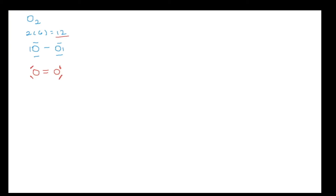Only in a situation where you've filled out the Lewis structure and you're using too many valence electrons should you use a double bond. As a hint, eventually you might also have to use a triple bond, but only use a triple bond if you're still using too many valence electrons after a double bond. Do not just blindly add triple bonds. Start off with the same steps as before, and when you do your final count, if it doesn't work, then you can try a double bond.